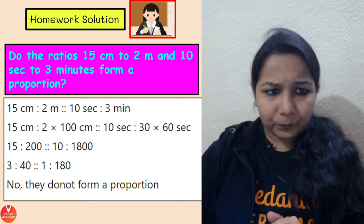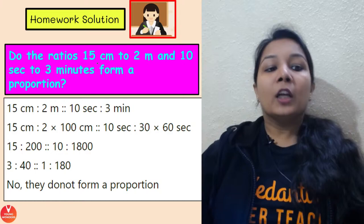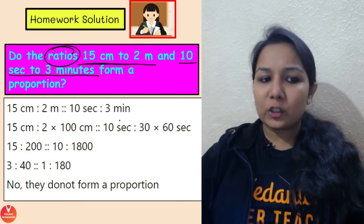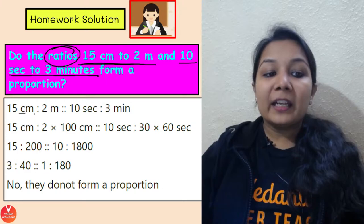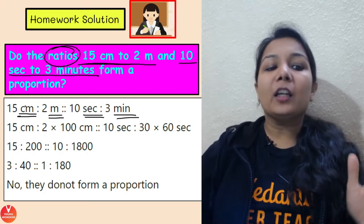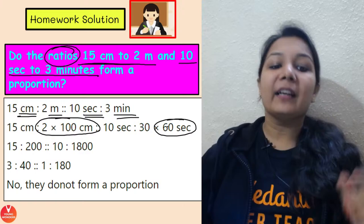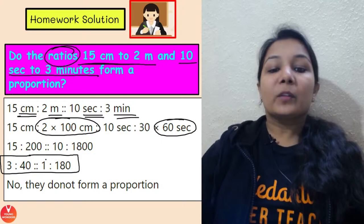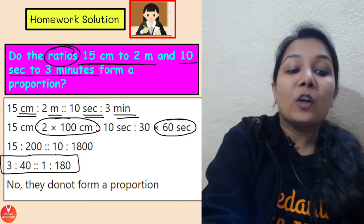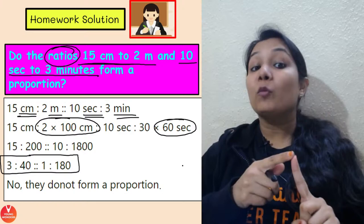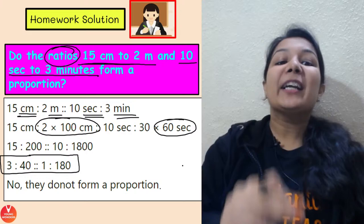For the homework: do the ratios 15 cm to 2 m and 10 seconds to 3 minutes form a proportion? Remember, in a ratio units should be the same. Meter and centimeter are not the same, so first we convert the higher unit to the smaller unit. Similarly, minutes and seconds need to be made the same. When you find the two ratios, you see they are not equal — so they do not form a proportion.